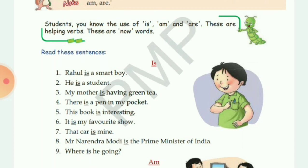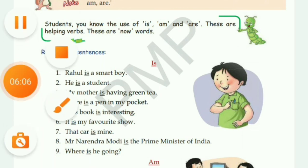So all these sentences are very clear — 'Rahul is a smart boy', 'He is a student', 'He is happy', 'My mother is having green tea', 'My father is reading newspaper', 'There is a pen in my pocket', 'There is a book in my bag'. These are all examples of where we use 'is' while writing or speaking. Always remember these rules.